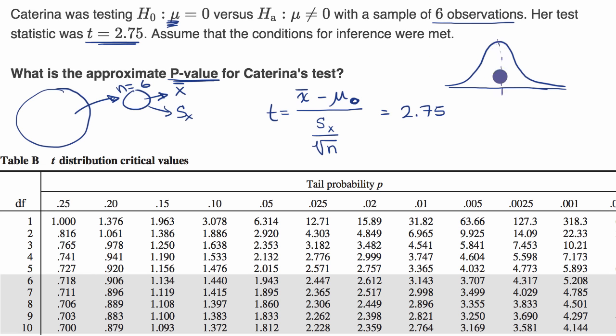What we care about is things that are at least 2.75 above the mean and at least 2.75 below the mean, because we care about things that are different from the mean, not just things that are greater than or less than the mean.